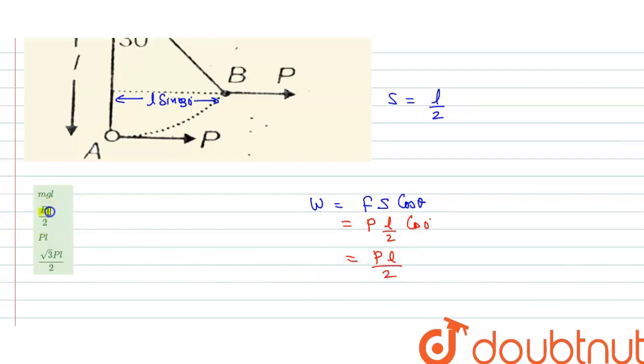So our correct option is option B, PL by 2. I hope you have understood this explanation, thank you.